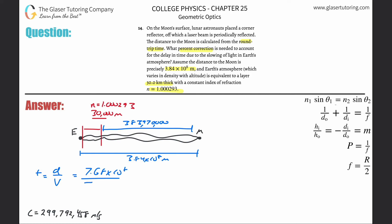Dividing by the exact speed of light — 299,792,458 m/s — we calculate: 7.68×10⁸ divided by 299,792,458, which gives a total round-trip time of approximately 2.56 seconds. I'll call this the round-trip time without Earth's atmosphere.